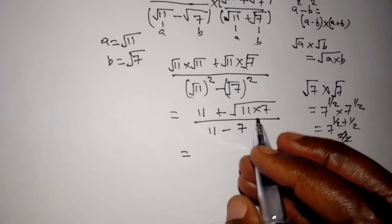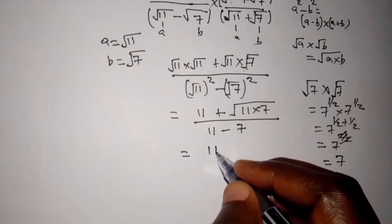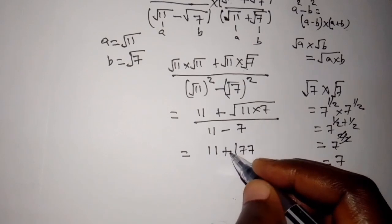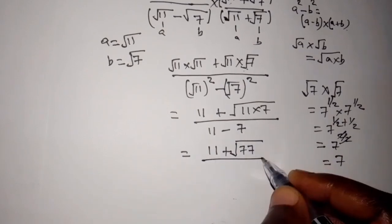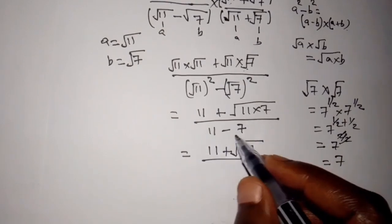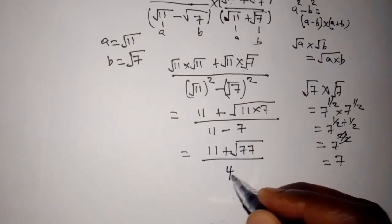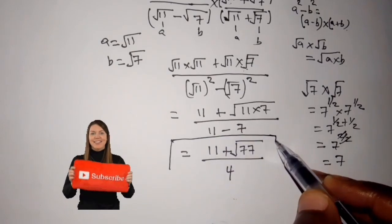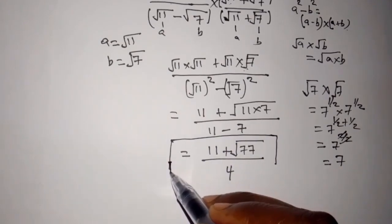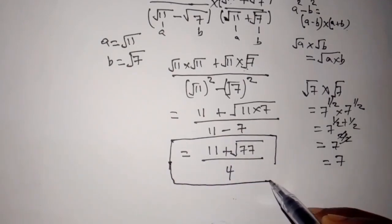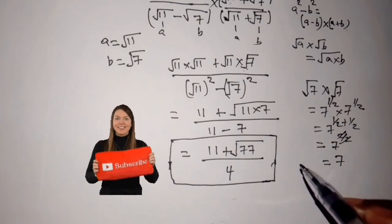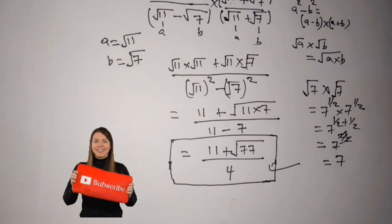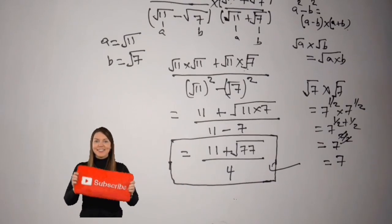This gives us 11 plus square root of 77 over 11 minus 7, which is 4. So our final answer is 11 plus square root of 77 over 4.